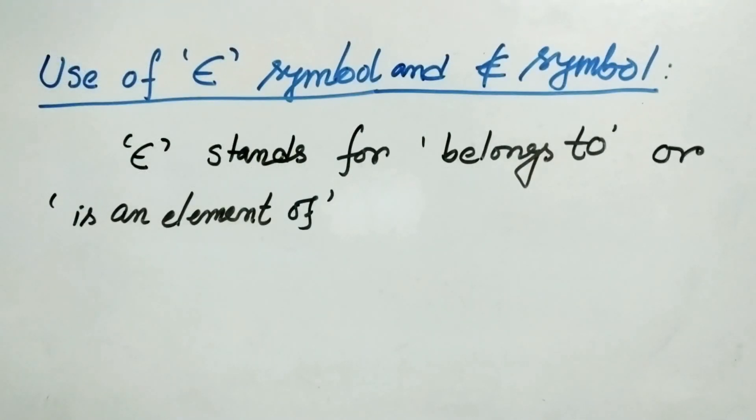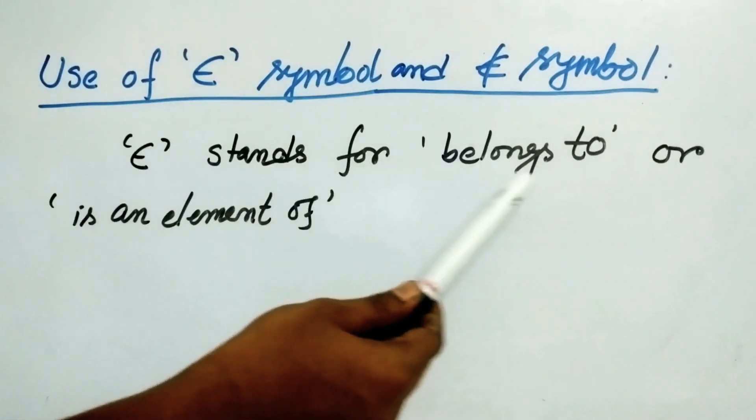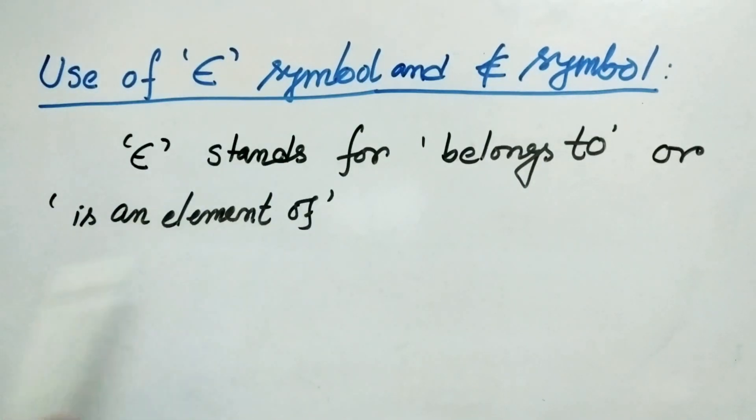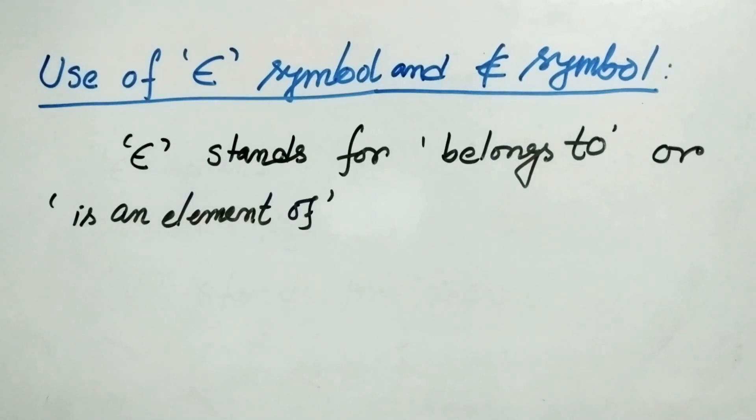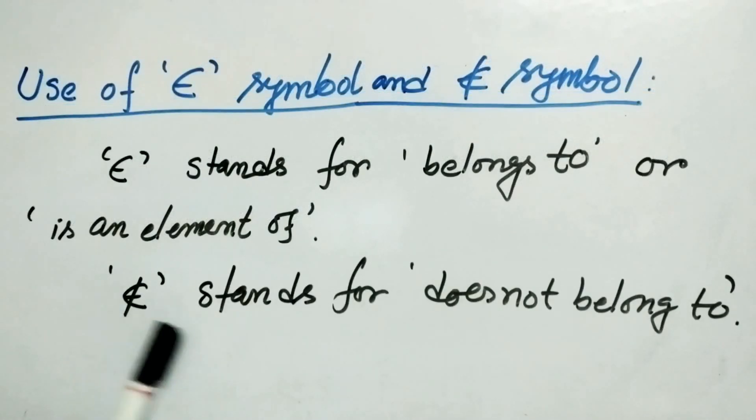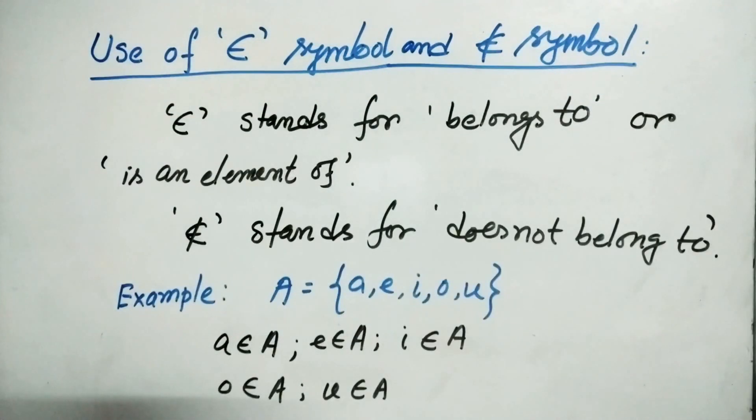Now the use of epsilon symbol. The epsilon symbol stands for belongs to or is an element of a set. Whereas this symbol stands for does not belong to that set. So let us go for an example. So we have previously taken that A is equal to the set of vowels in English alphabet. So it is A E I O U.